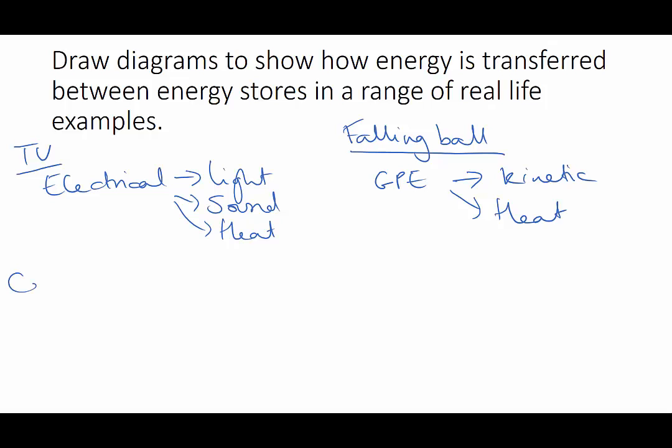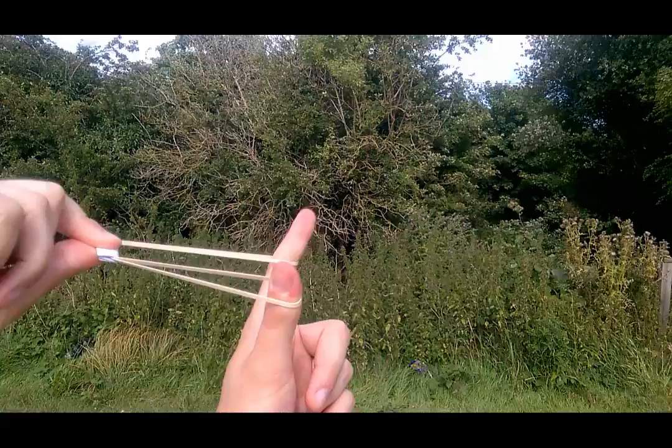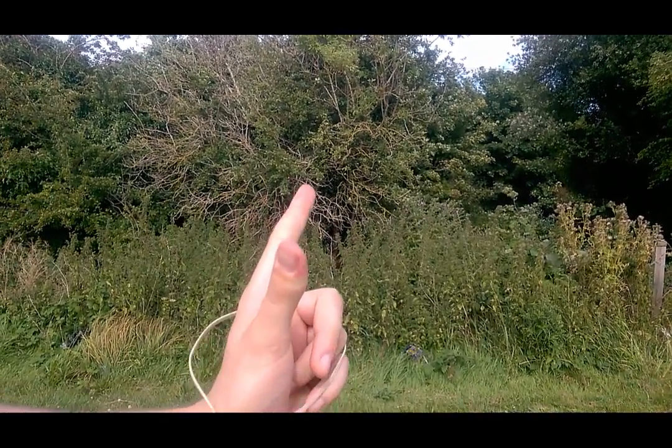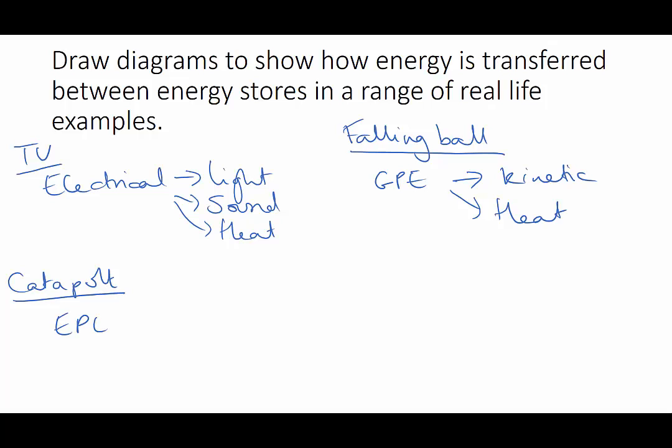In our next example, that's a catapult. We're looking at an elastic band that's been pulled back ready to fire a missile. As the elastic band is stretched it's got elastic potential energy which is transferred into the kinetic energy of the missile and the band, and again some heat is released.